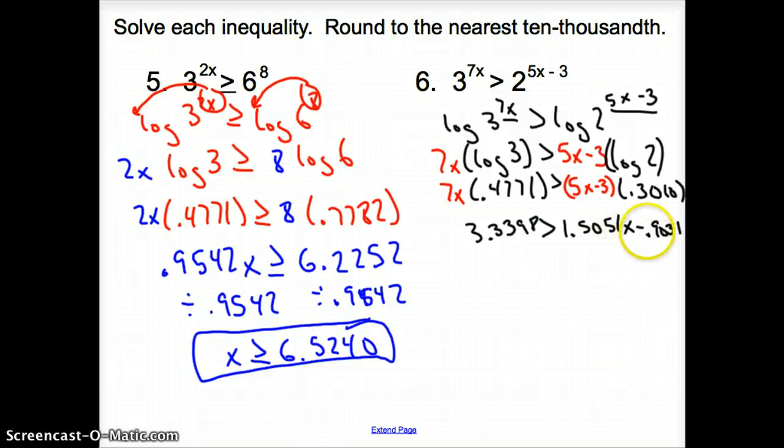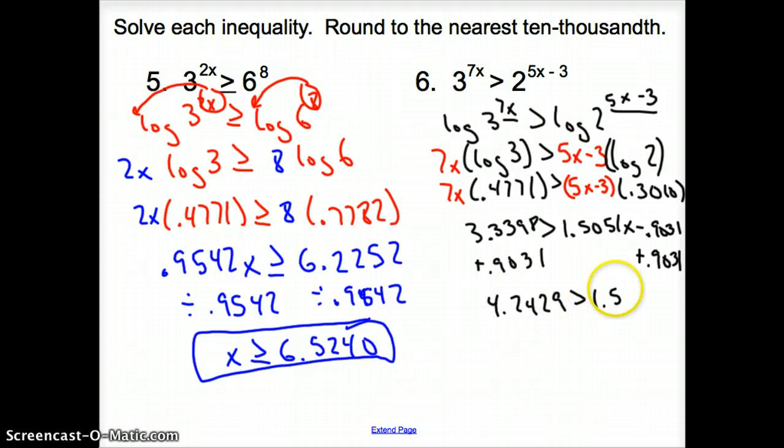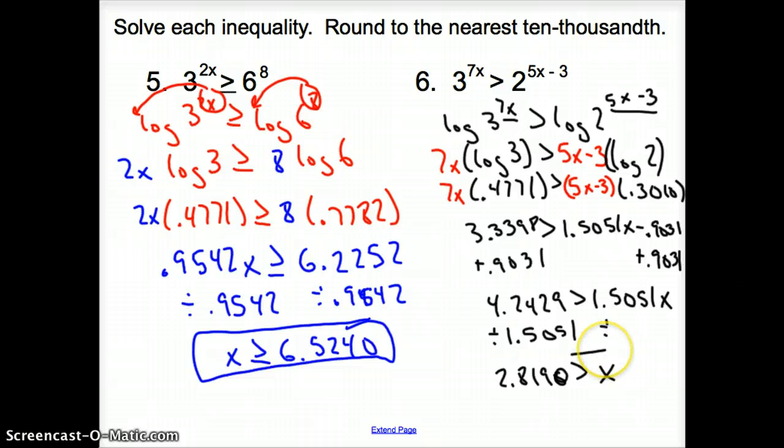Now we solve for x. Treat them just like normal numbers. I know they look like big bad decimals, they're not too bad. We're just going to add this decimal over to the other side to come up with 4.2429 and that's greater than 1.5051x.